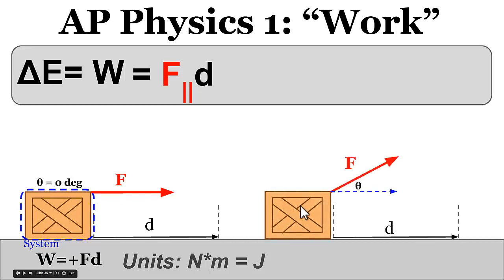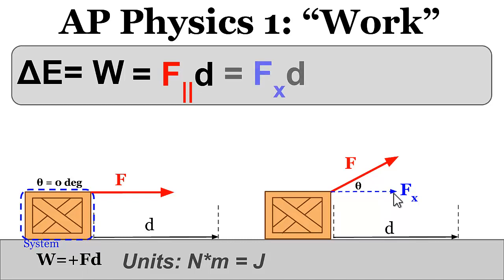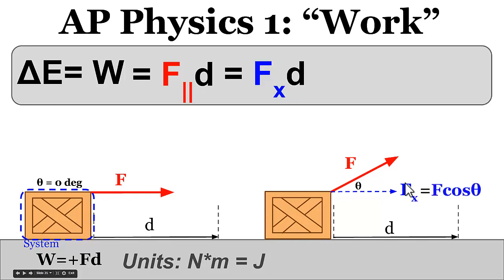If we look at this situation again but instead use an angled force, there's not as much energy added to the system — because not all of that force is in the same direction as the displacement. Only the x-component of that force is parallel to the displacement, and so only the x-component of the force is actually transferring energy to the box. The change in energy of the box system equals the x-component of the force times the displacement.